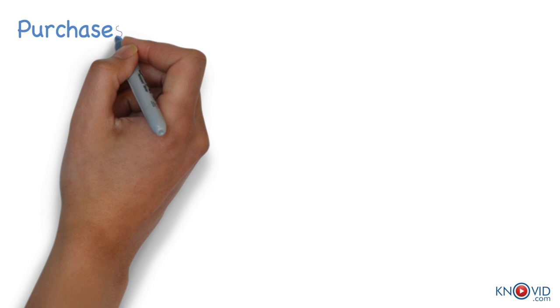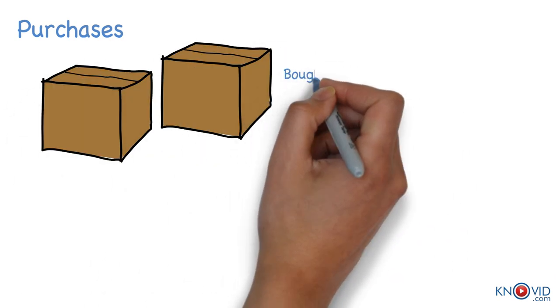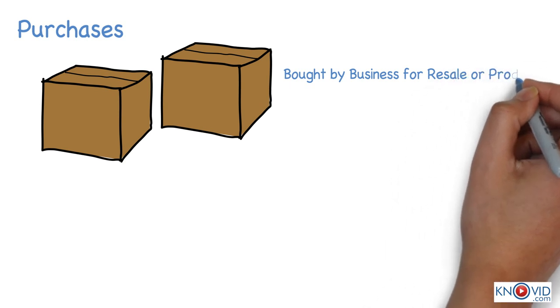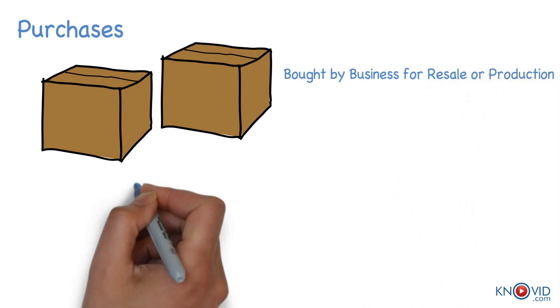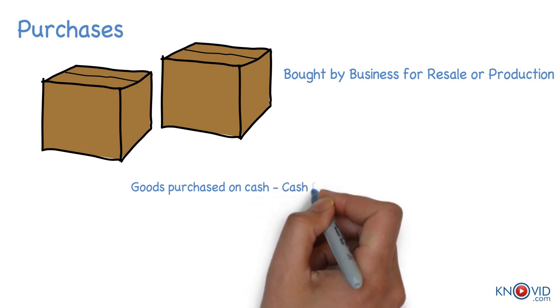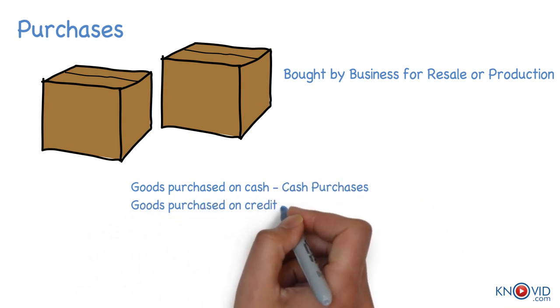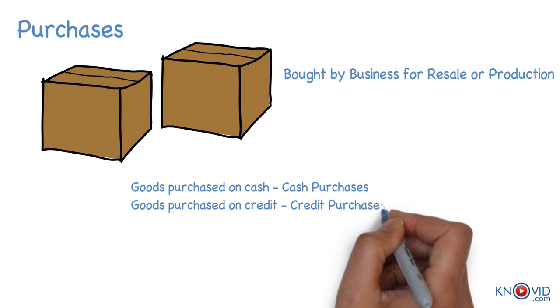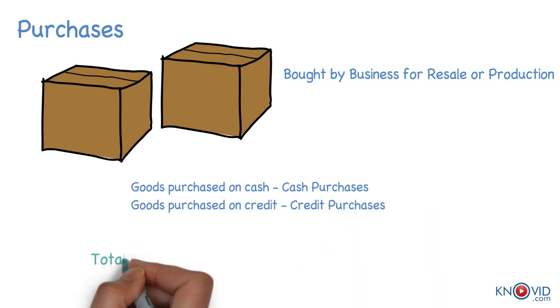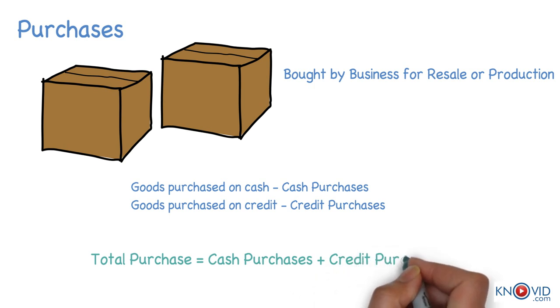Purchases refer to the amount of goods bought by a business for resale or for use in production. Goods purchased for cash are called cash purchases. If it is purchased on credit, it is called credit purchases.